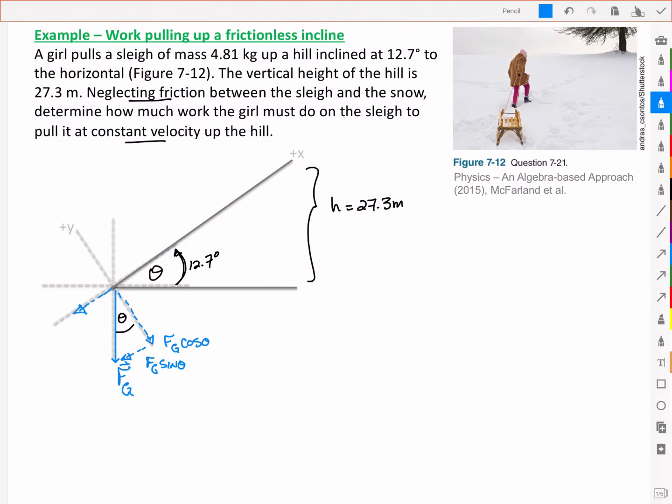So that's our Fg sin theta. We've also got a normal force, and that's going to be balancing this Fg cos theta. This is Fn, our normal force, acting along the positive y-axis.